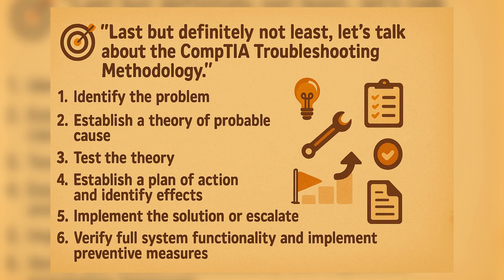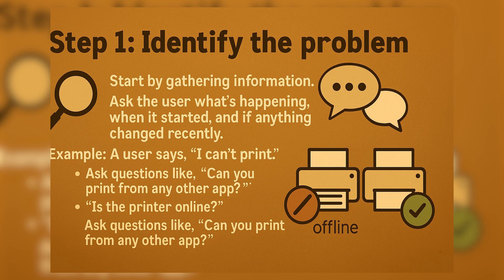Last but definitely not least, let's talk about CompTIA's troubleshooting methodology. This isn't just a test concept — it's a real process used by IT professionals every single day. Here are the seven steps you need to know. Step one: identify the problem. Start by gathering information — ask the user what's happening, when it started, and if anything changed recently. Example: a user says they can't print — ask questions like, can you print from another app, or is the printer online?